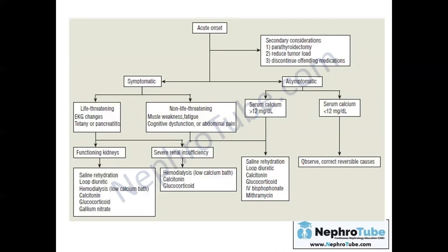The treatment approach depends on the presentation: symptomatic or asymptomatic. If asymptomatic and serum calcium is below a certain threshold, treat any reversible cause and observe. If serum calcium is more than 12 mg/dL, give IV saline for rehydration, loop diuretics to increase calcium excretion, calcitonin, glucocorticoids, and bisphosphonates.